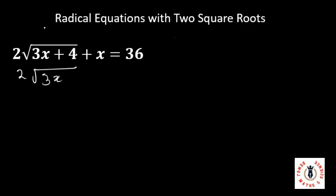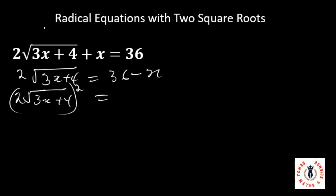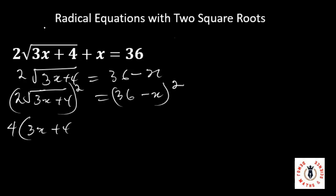Collecting like terms so that 2 times the root of 3x plus 4 becomes 36 minus x. Now we have the root of 3x plus 4 on one side and the rational number on the other side. So we can square both sides: 2 times the root of 3x plus 4, all squared, equals 36 minus x, all squared. Expanding the left side: 2 times 2 is 4, into 3x plus 4 — remember the root of 3x plus 4 squared becomes 3x plus 4.